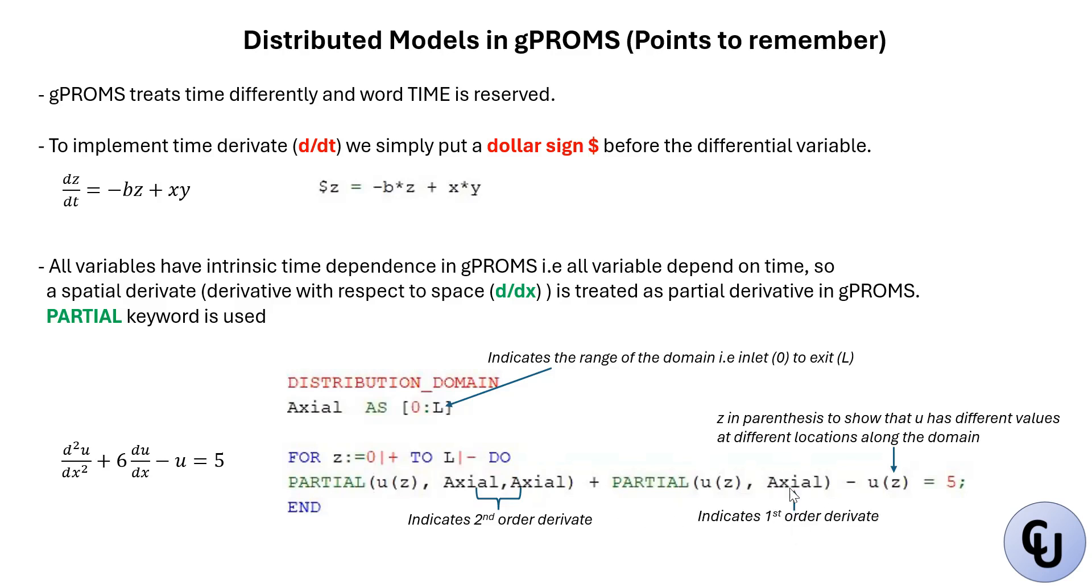This indicates first order because it's just one axial. The vertical bar plus and vertical bar minus exclude the upper bound. This is done since boundary conditions have already been specified.